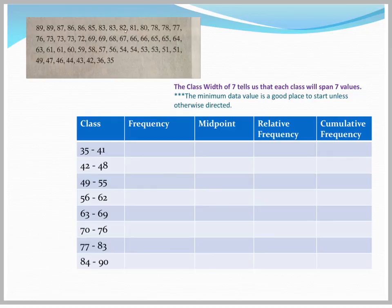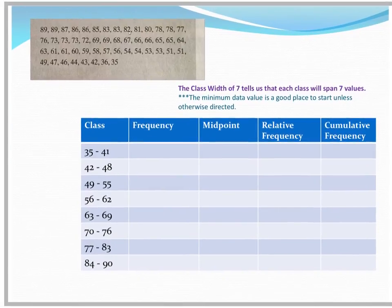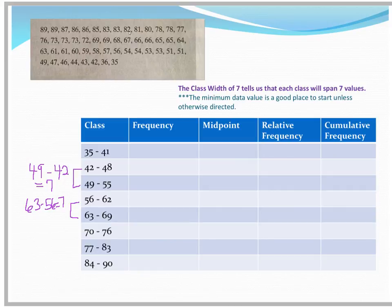Realizing that you're not going to be counting out your span of 7 numbers for each class, take a look at the lower class limit of each class. If you subtract 49 minus 42, that equals 7. Likewise, if you subtract 63 minus 56, you also have 7. The distance between each lower class limit equals 7. So you can get from one class to the next by just adding 7 to each lower class limit.